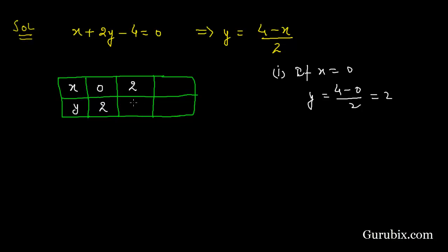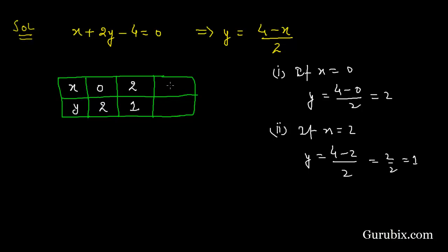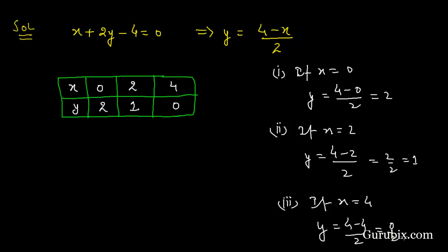Let us see how: if x equals to 2, then y equals to 4 minus 2 over 2, which is 2 over 2, and that is 1. And if x equals to 4, then y equals to 4 minus 4 over 2, which is 0 over 2, and that is 0.